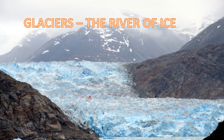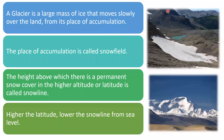What are glaciers? Glaciers are huge masses of moving ice, also called the river of ice. A glacier is a large mass of ice that moves slowly over the land from its place of accumulation. The place of accumulation of this snow is called a snowfield. The height above which there is permanent snow cover at higher altitude or latitude is called the snow line.